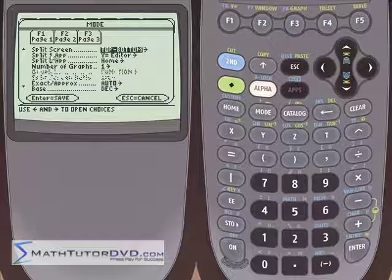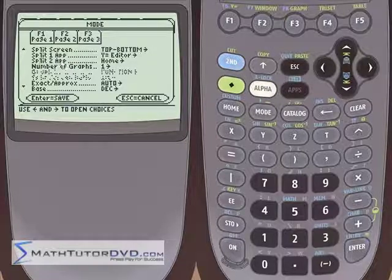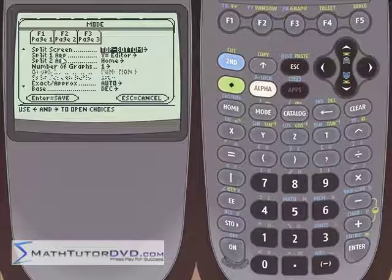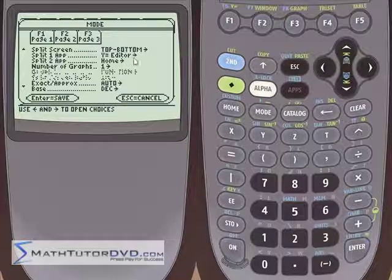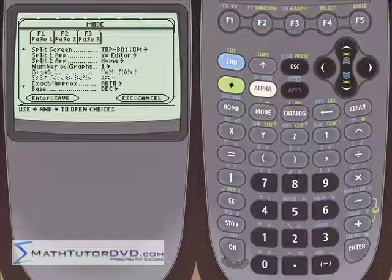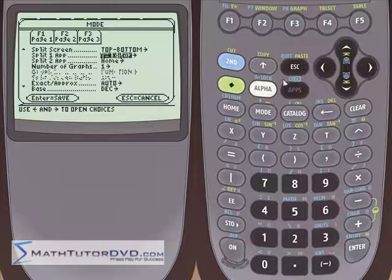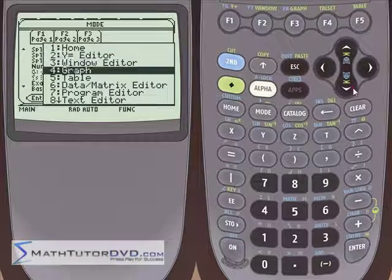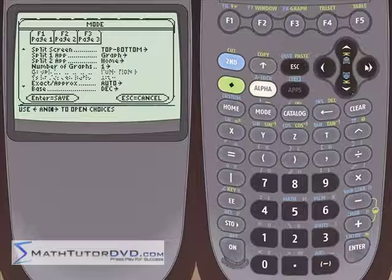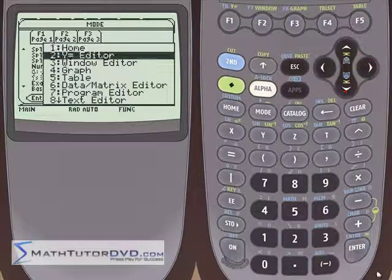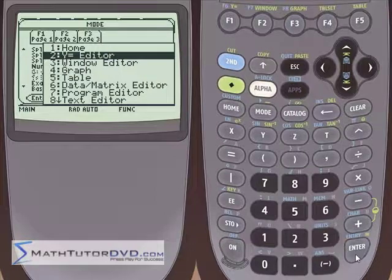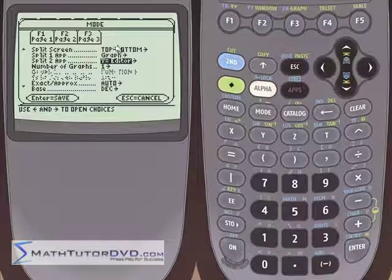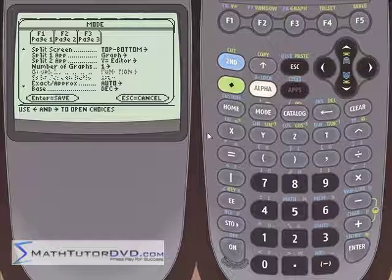When you do that you'll see that underneath it these little entries become active. Split number one app, which is another way of saying what do you want to see on the top of your screen. This is the Y equals editor. What do you want to see on the bottom of the screen? This is the home guy here. So you can select anything you want on the top and on the bottom. Let's choose something useful. Let's choose graph for the top of the screen and for the bottom of the screen let's choose Y equals. You can put other things here and we'll explore these a little bit later, but for right now let's look at the graph on the top and the Y equal editor on the bottom. So we'll hit enter to save this and notice now the screen is split in two. We see our graph up here and we can also see our functions.